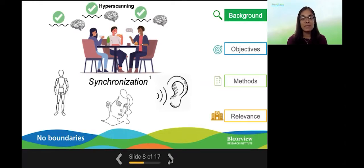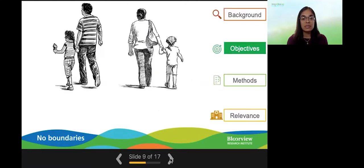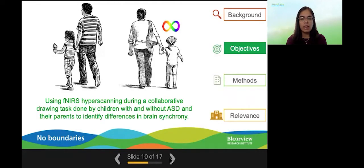This concept of synchronizing behavior and cognition can also be observed between parents and their children. Since children with autism spectrum disorders tend to have difficulty forming and maintaining interpersonal relationships, we wanted to understand how synchronization of brain waves may differ between children with and without autism spectrum disorders and their parents using a collaborative drawing application task.